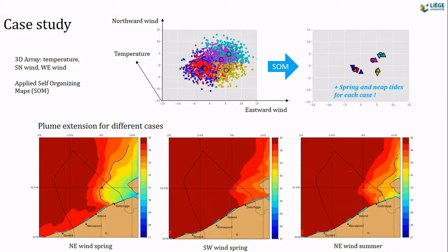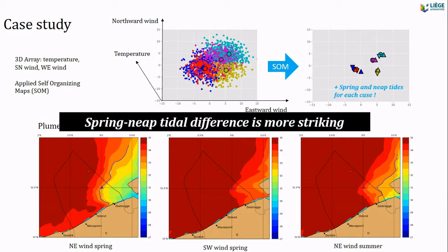And they do affect. You see the difference, for example, in spring and summer with different wind directions and how the salinity plume from the Scheldt behaves — it's quite different. But the biggest difference is between spring and mid tide. Spring tide, just to remind you, is twice bigger than mid tide by amplitude.